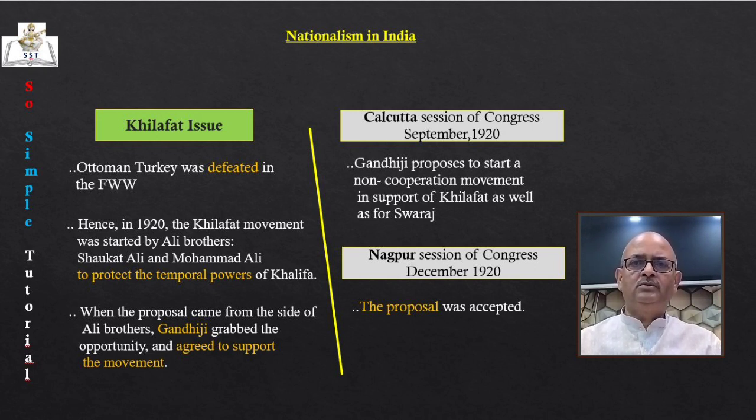He had practiced as a lawyer in Durban for about 20 years, struggling to improve conditions of poor Indians treated badly by the racist government of South Africa. During this struggle he evolved the technique of Satyagraha — a novel method of mass agitation. Satyagraha is made up of two words: 'Satya' meaning truth and 'Agraha' meaning to insist on something, so Satyagraha means insisting on truth or holding firmly to truth.